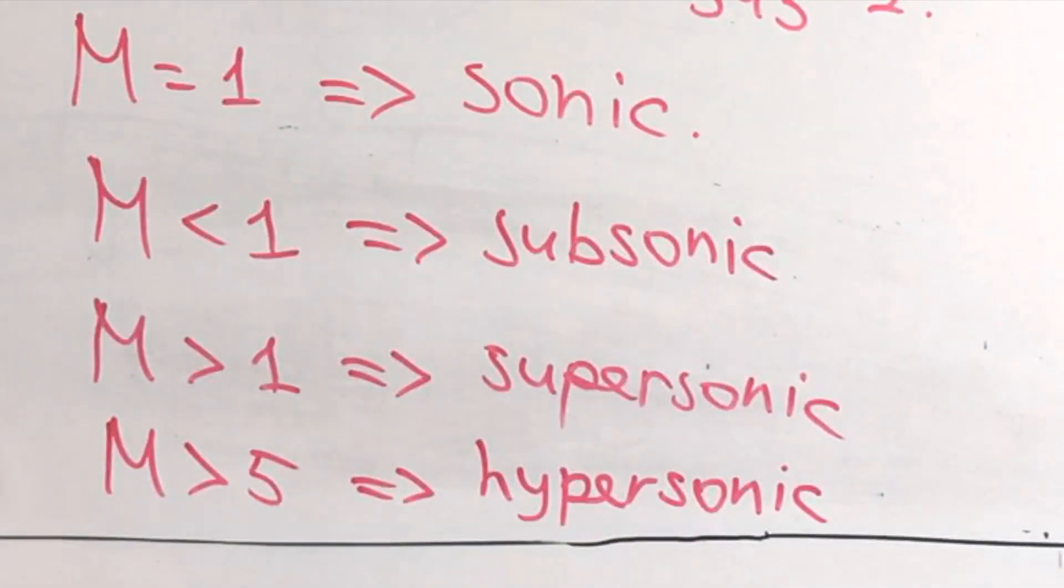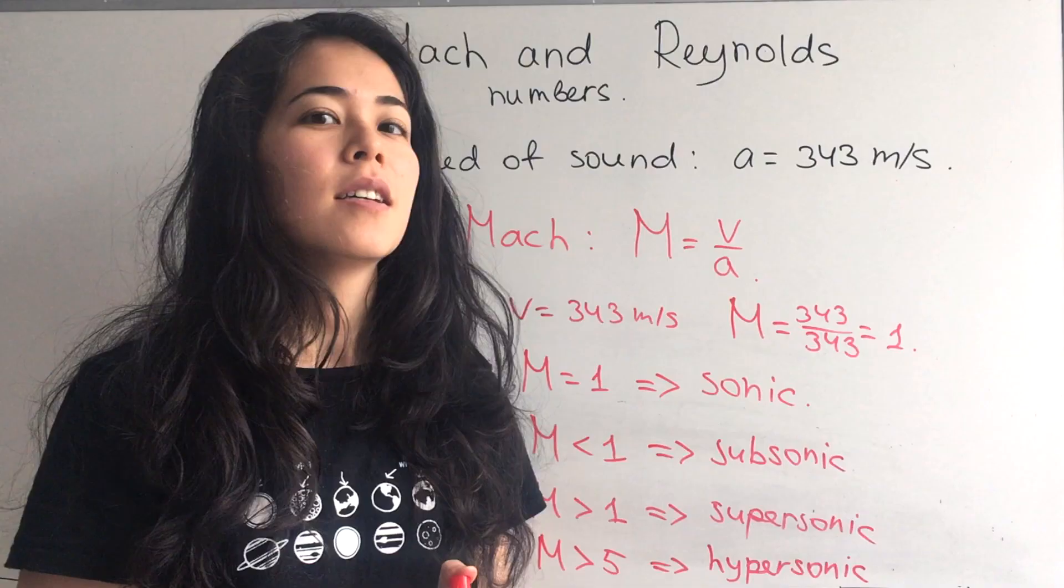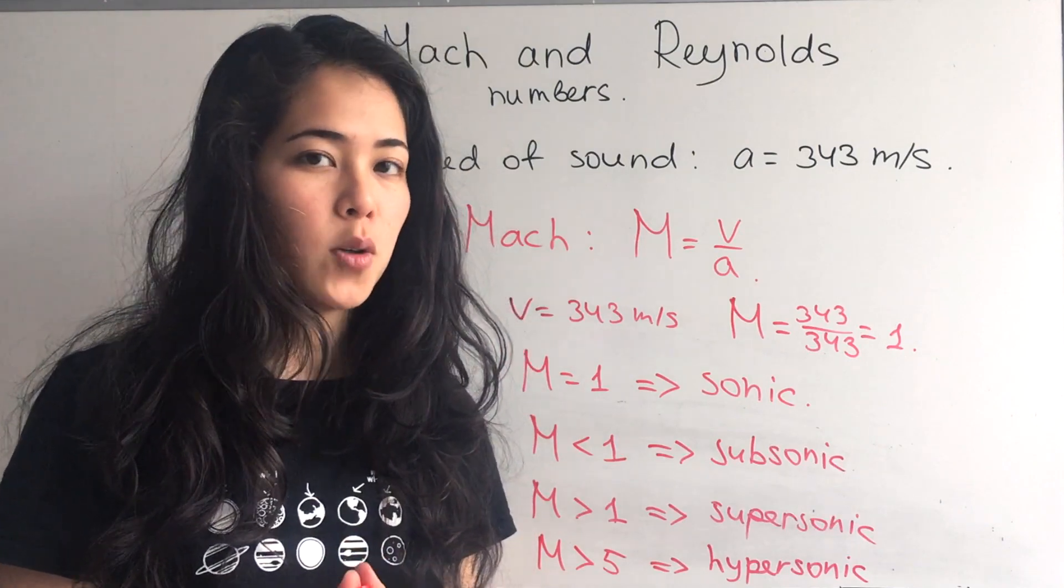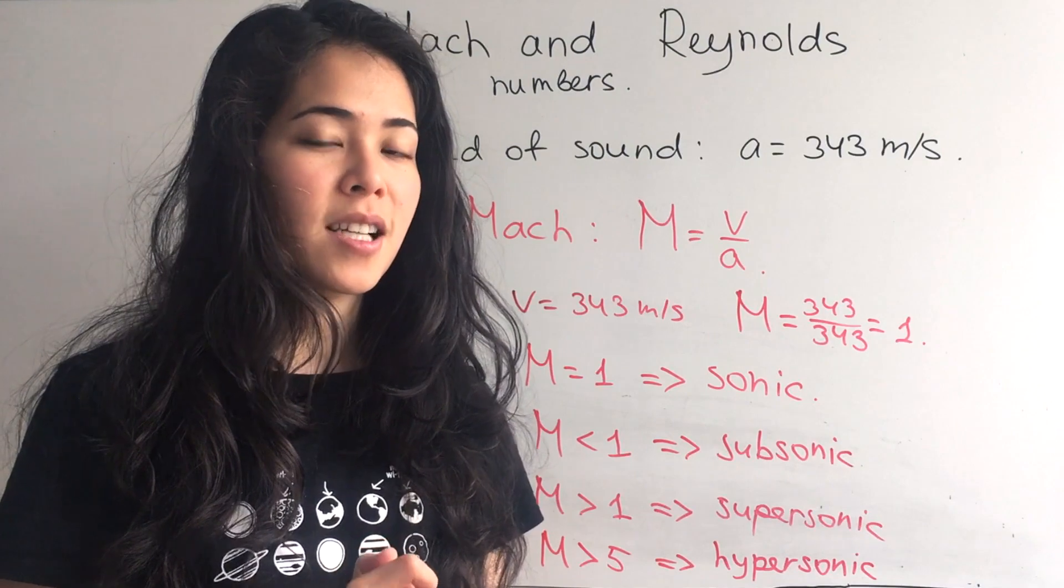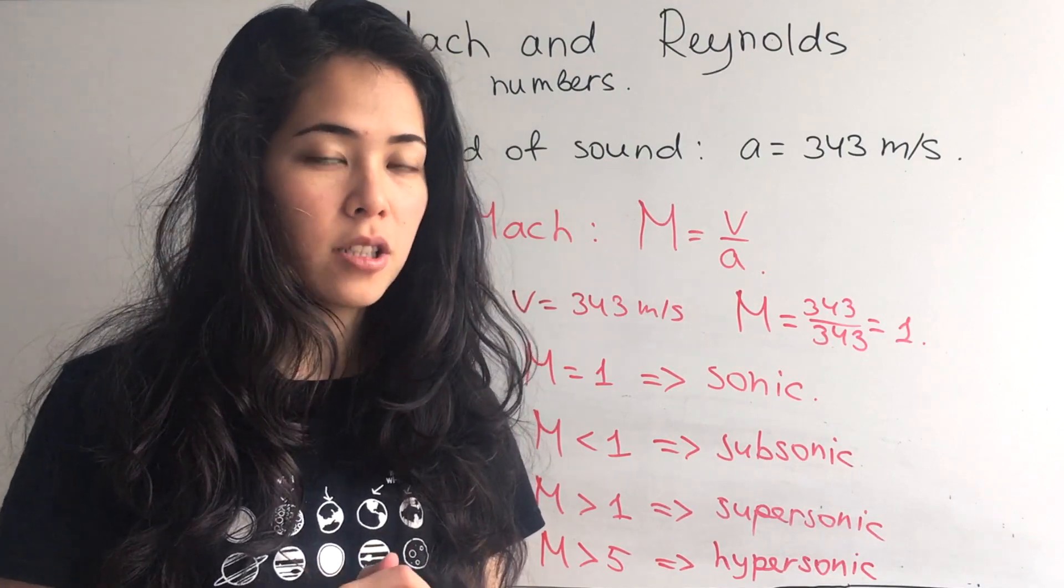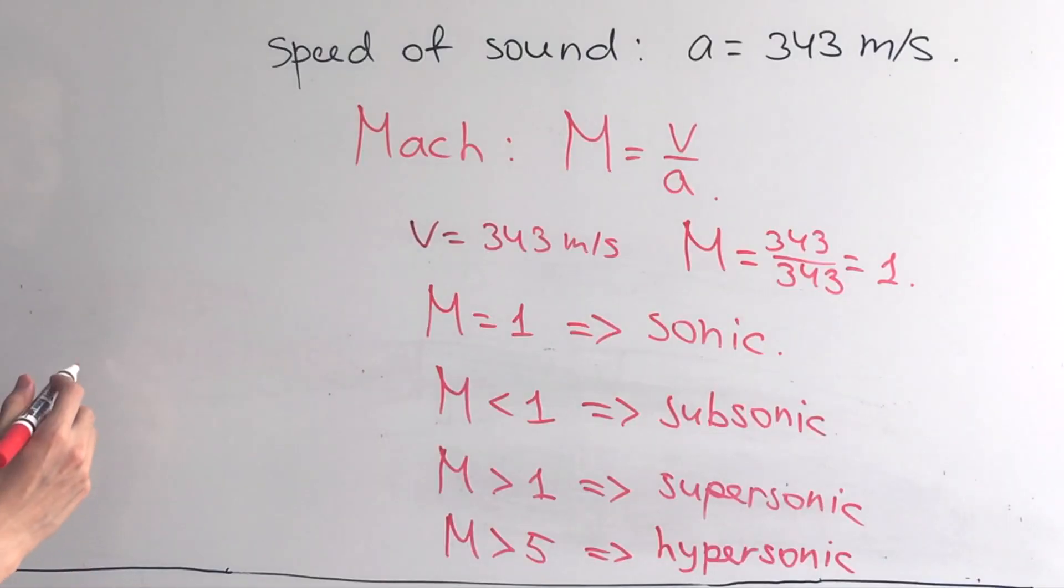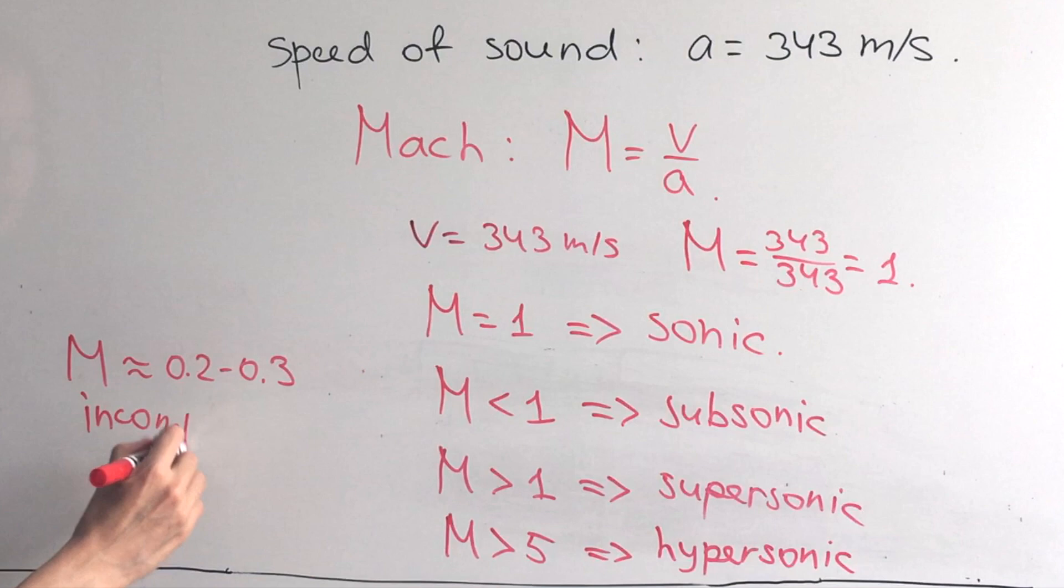Very, very fast - usually only military aircraft can reach those types of speeds, or something entering the atmosphere from space. One more concept we need to touch on here is incompressible and compressible flows. Remember how we assumed incompressible flow for low speeds of air? Now we can actually describe that with the Mach number. If Mach number is approximately 0.2 to 0.3, then we will have incompressible air. We can assume that compressibility effects are very minimal.